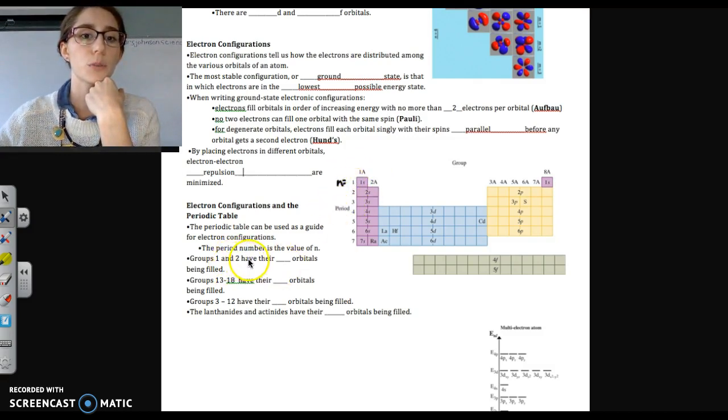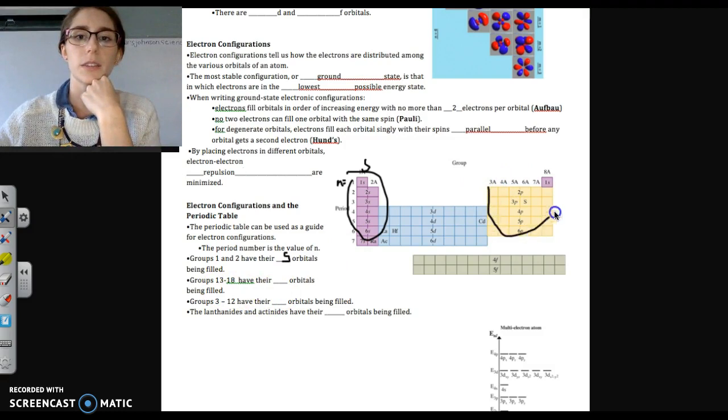So for groups 1 and 2, this is called the S block. So here's groups 1 and 2, S block. We call them that because their S orbitals are what gets filled when we're filling their valence shell. So their valence configuration ends with S orbitals. Groups 13 through 18, that's over here, we call this the P block because their P orbitals are being filled in the valence shell. So we end up with their P orbitals being filled.